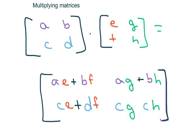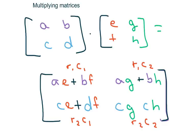This video is on multiplying matrices. Basically what we're doing is multiplying row 1 times column 1, row 1 times column 2, row 2 times column 1, and row 2 times column 2. You might want to look back at this, but I think the best way to do it is just to do an example.